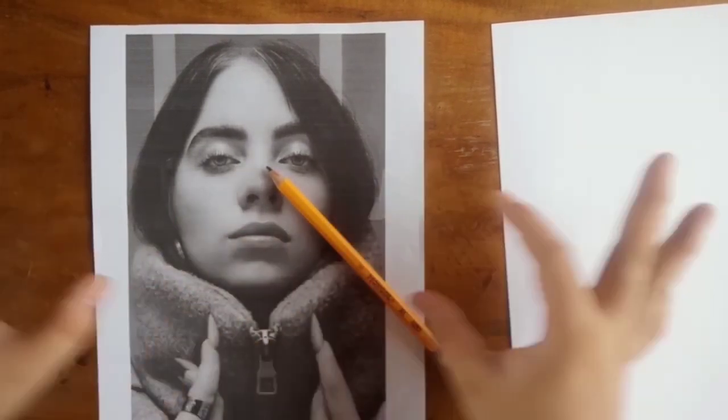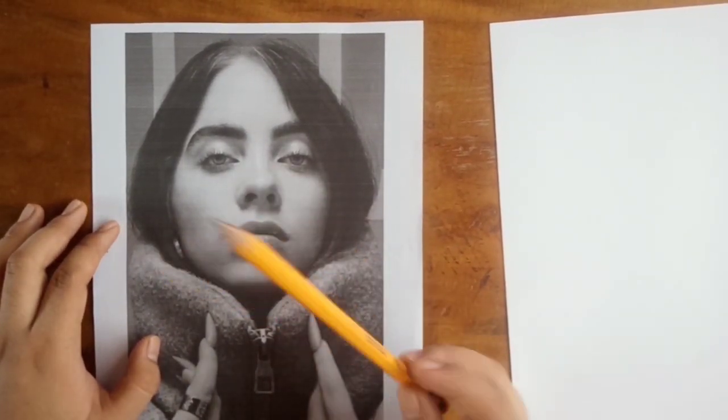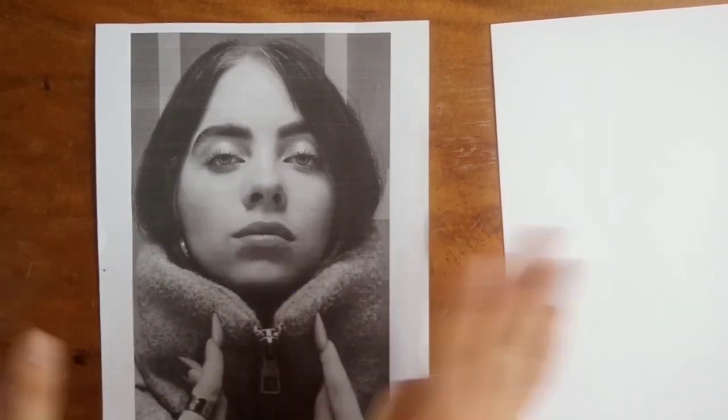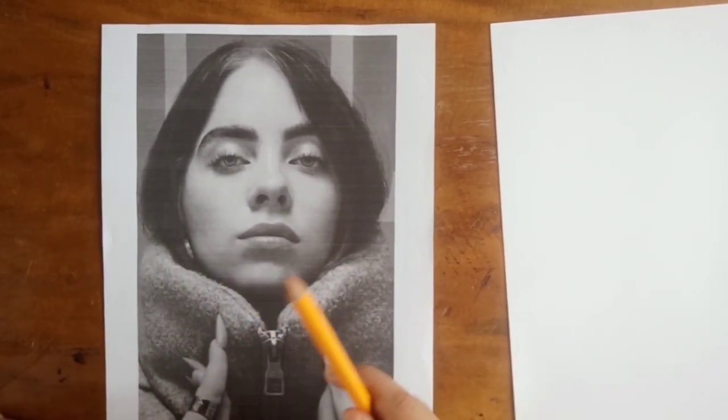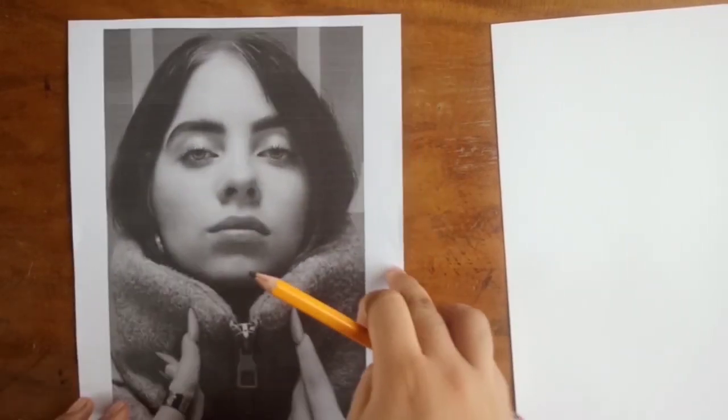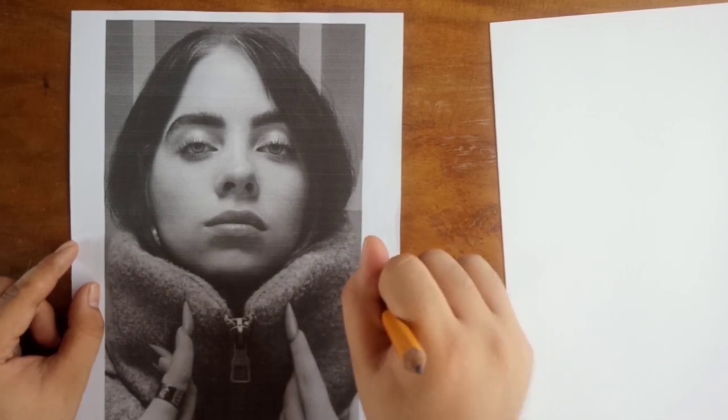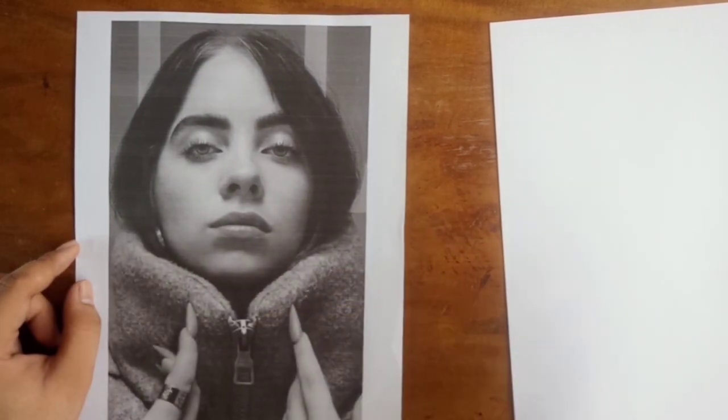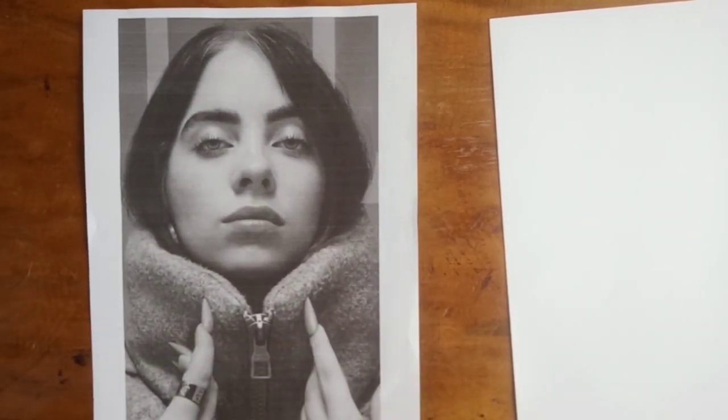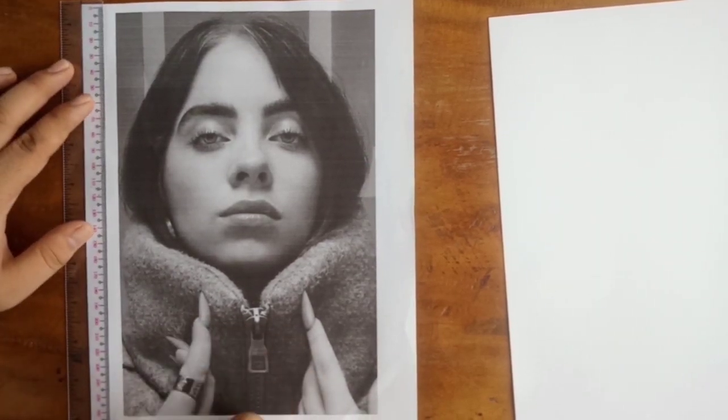Pag-adjust ng size ng photo, dapat hindi siya stretch, kasi pangitignan, and then hindi magiging accurate yung result. Kasi kung ano yung nasa bond paper na print natin, ganun din yung magiging result niya. Lalagyan natin ng grid itong buong bond paper, and then kung ano yung measurement dito sa reference natin, is yun din dun sa blank paper natin.